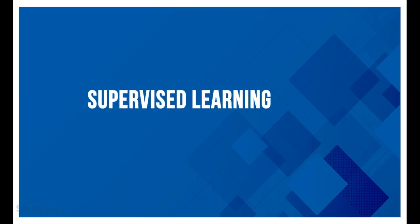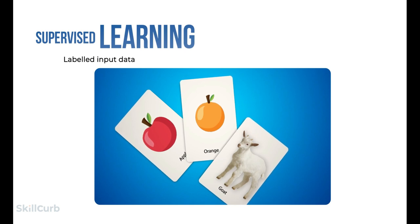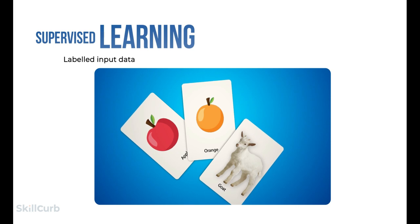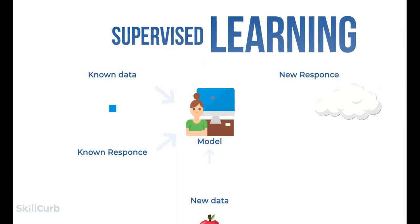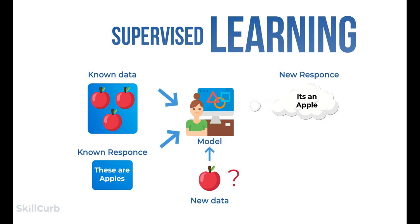Starting with supervised learning, this mode mimics the use of flashcards for demonstration. Pictures in flashcards are labeled with the name of the object. After training a person with labeled cards, if we show them an unlabeled card, they can name the object on their own — this is what we do in supervised learning with the machine. The training data is similar to a teacher or supervisor. The outcome of the model is based on previous experiences, making supervised learning task-oriented.